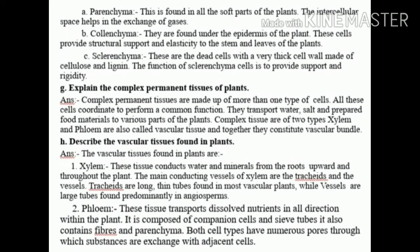Number 8h: Describe the vascular tissues found in plants. Answer: Number one, xylem — this tissue conducts water and minerals from the roots upward throughout the plants. The main conducting vessels of xylem are tracheids and vessels. Tracheids are long, thin tubes found in most vascular plants, while vessels are large tubes found predominantly in angiosperms. Number two, phloem — this tissue transports dissolved nutrients in all directions within the plants. It is composed of companion cells and sieve tubes, and also contains fibers and parenchyma. Both cell types have numerous pores through which substances are exchanged with adjacent cells.